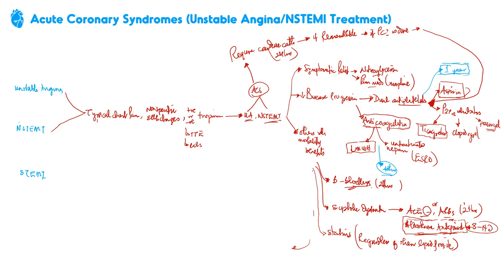GP2b/3a inhibitors are only used when the patient gets PCI — other than that there is no clear indication. It's a short-term infusion used if the PCI was problematic, maybe for about six hours, and that's it. You don't use it afterwards.